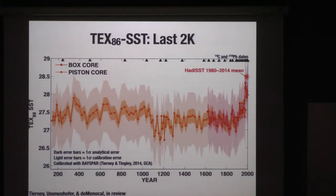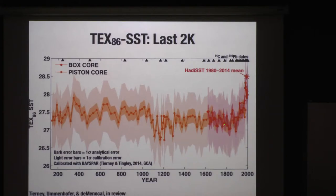What do we see? The first millennium is somewhat warmer, and then the second millennium AD is actually consistently cooler. This isn't completely classical last-millennium temperature history. But then the warming of the last 100 to 150 years, we see that quite clearly in the TEX86 data.